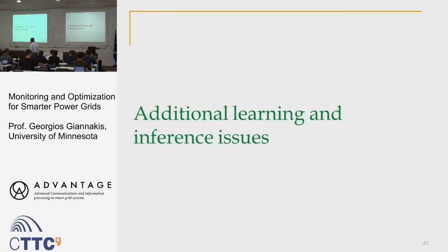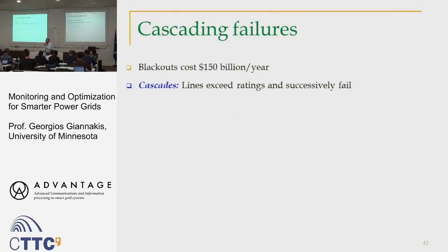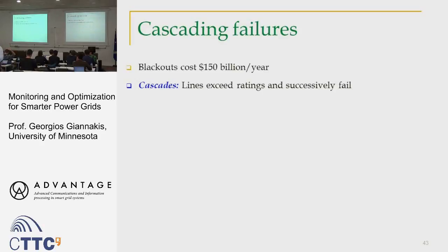There are other important learning and inference issues where signals-and-systems expertise can be very helpful. The first deals with cascading failures. What happens is: bad weather, lightning, or rain causes one line to drop, the power is redistributed, another line that was not designed to carry so much power fails, and successively, one after the other fails — creating a blackout.